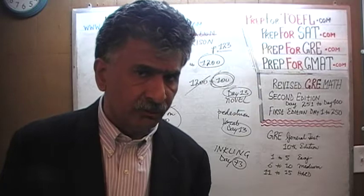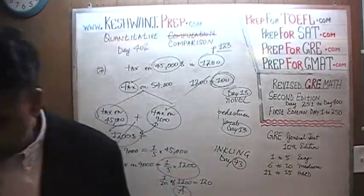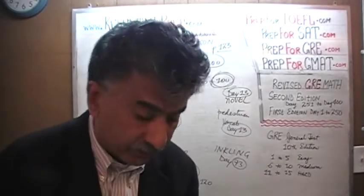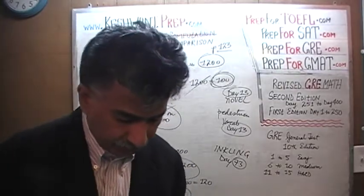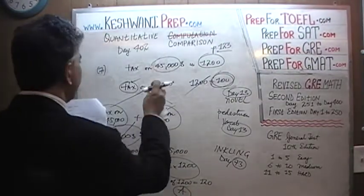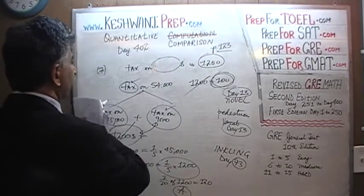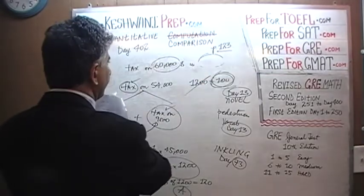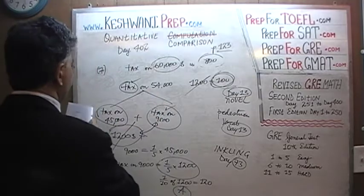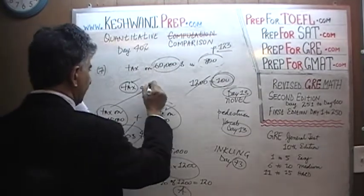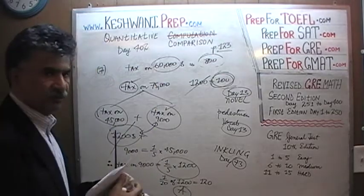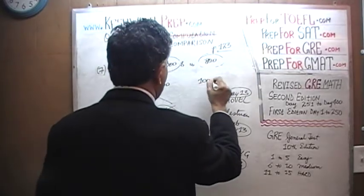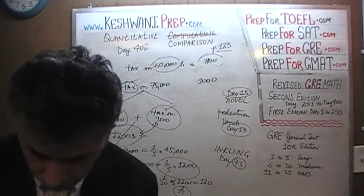Let's do one very similar practice question not in the book. I'll set it up and you solve it using both methods while I take a short break. Given: the tax on $60,000 is $800. Compare the tax on $75,000 versus $1,000.